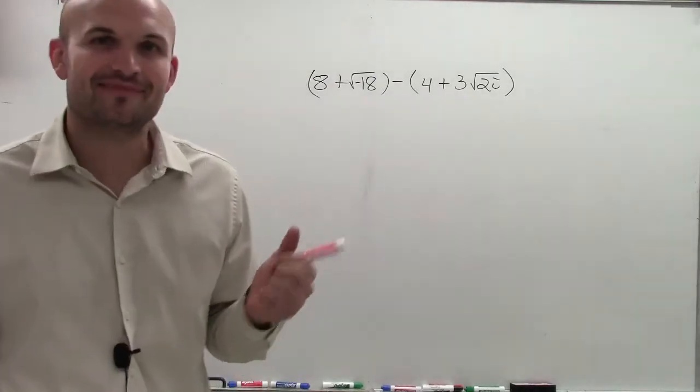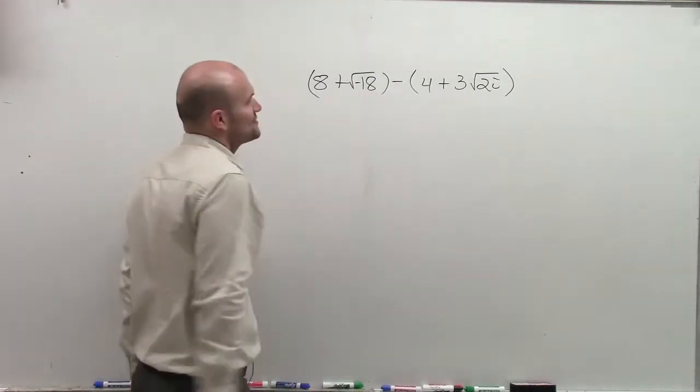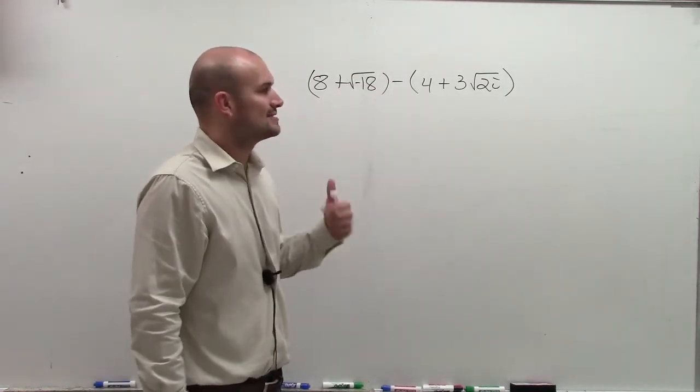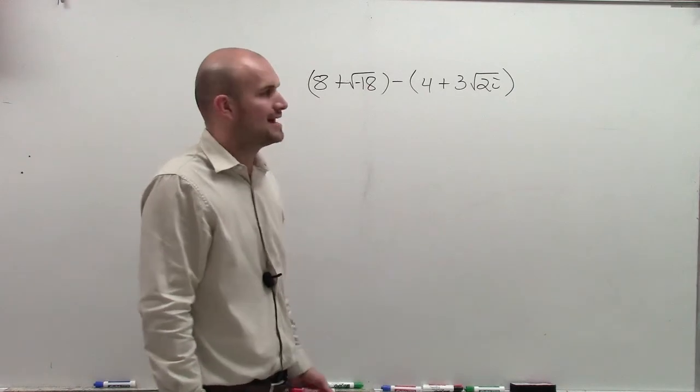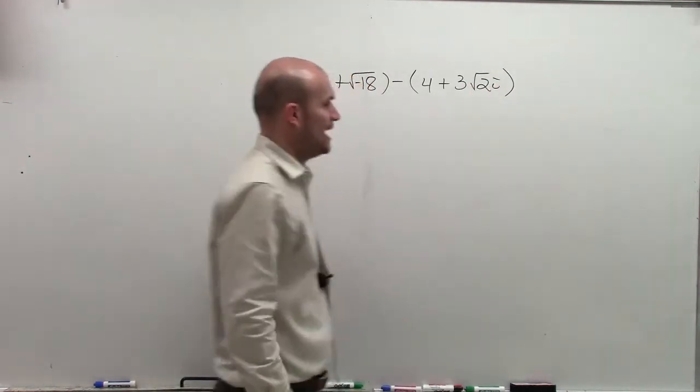This problem doesn't even look like any fun. But you know what, just for you, I'll do it. So you have 8 plus square root of negative 18 minus 4 plus 3 times the square root of 2 times i. And that's times i, not square root of 2i.